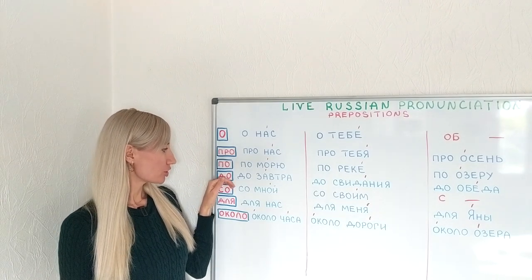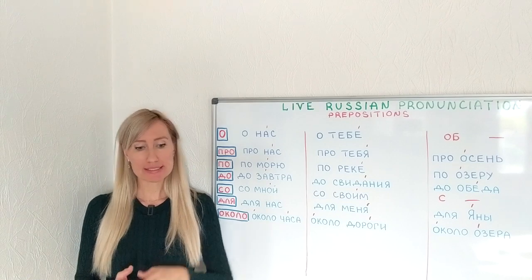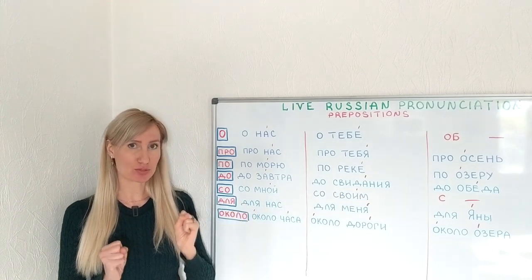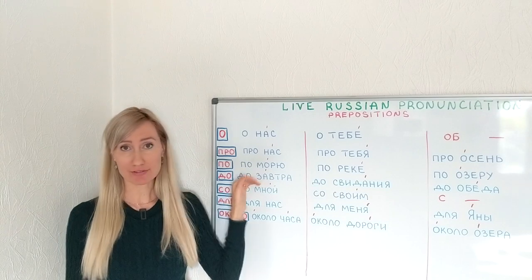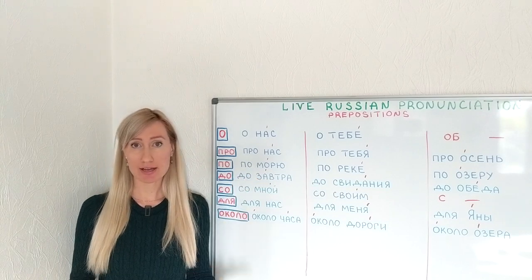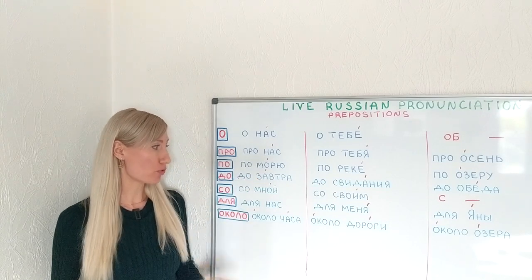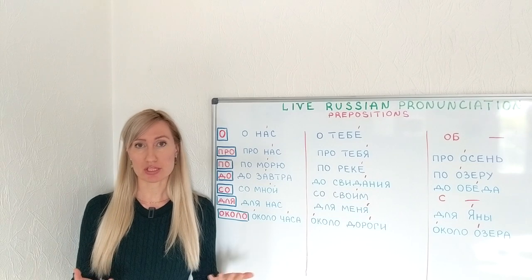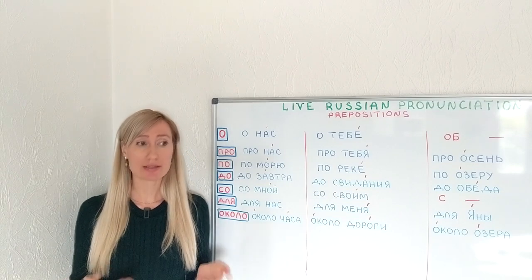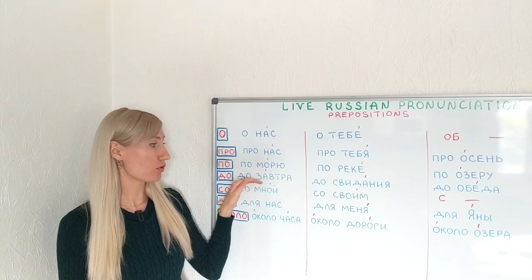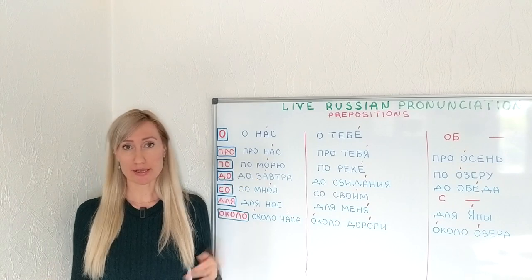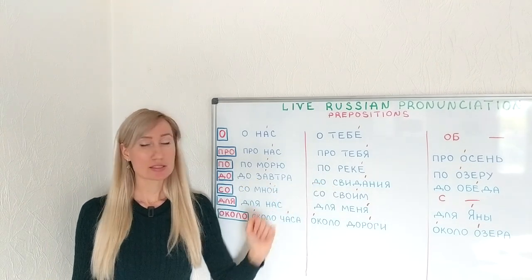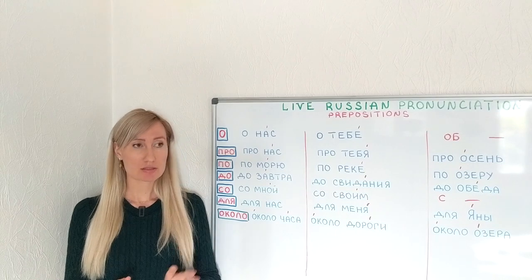The preposition ДО means 'until some time' or 'next to something.' ДО ЗАВТРА — until tomorrow. This is used when we want to say that we will see each other tomorrow. It's pronounced like ДА — ДО ЗАВТРА. If it's further from the stressed syllable, listen: